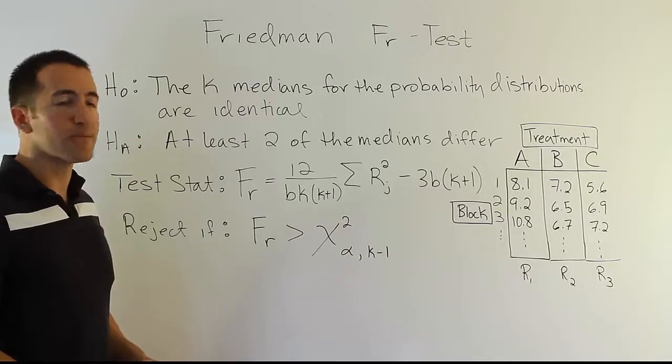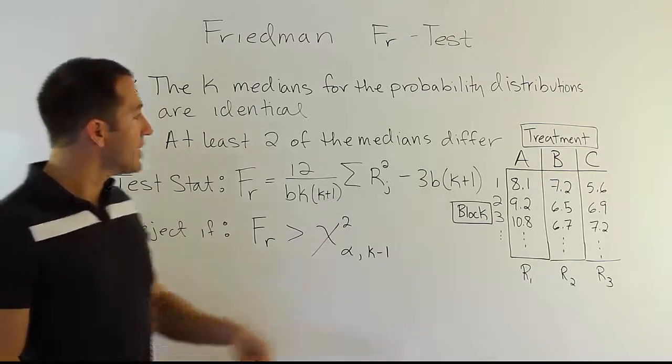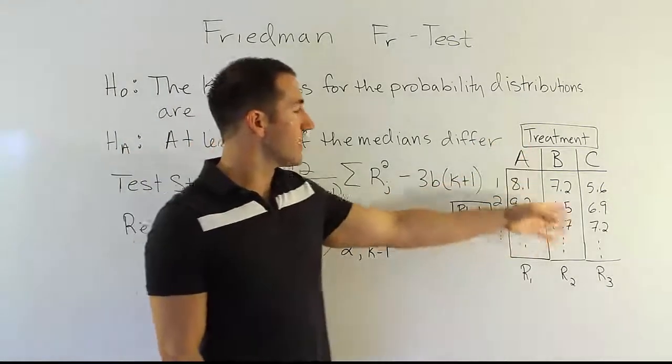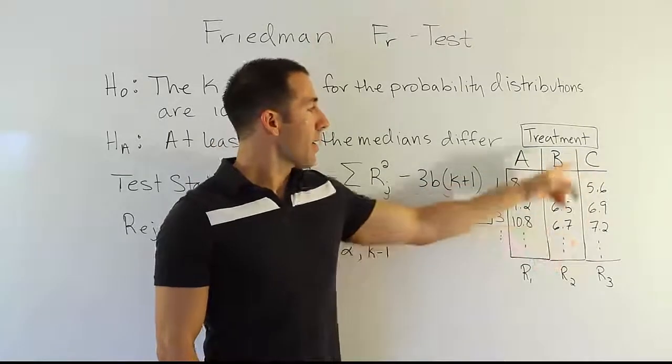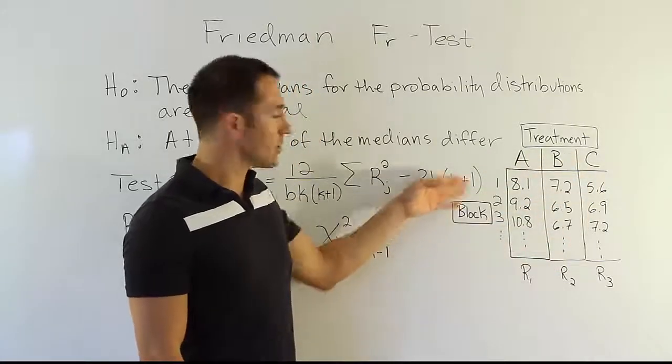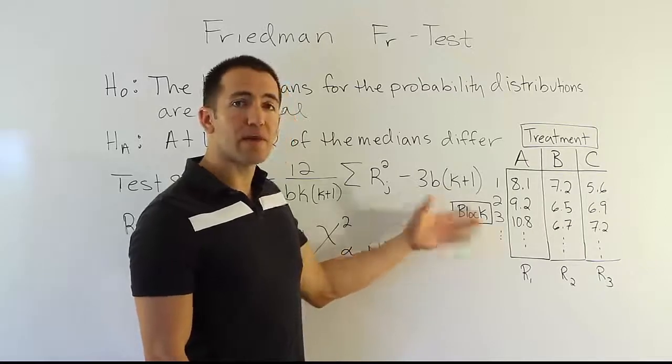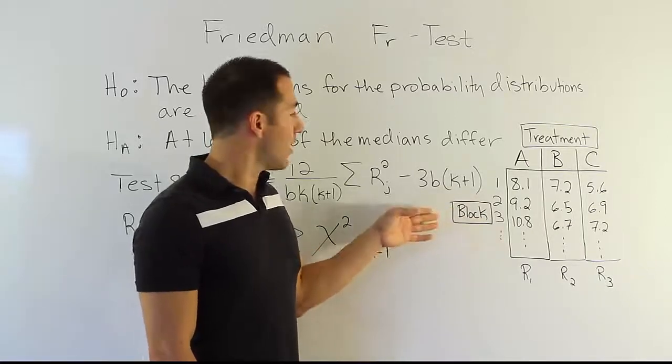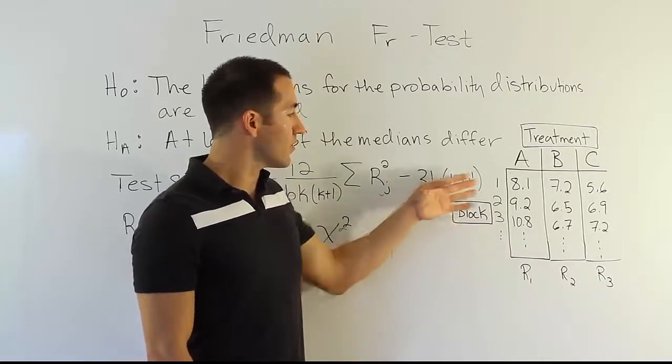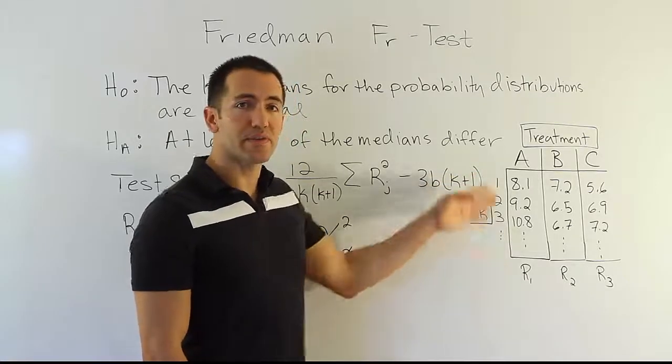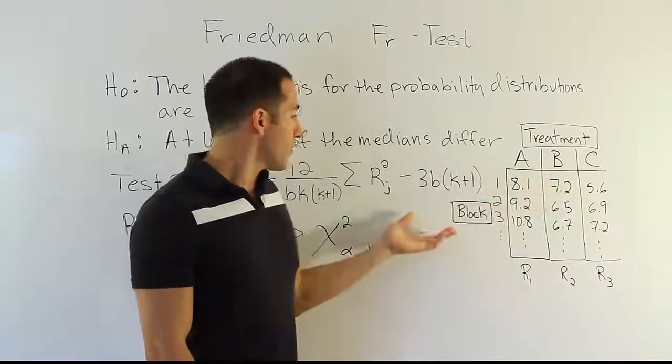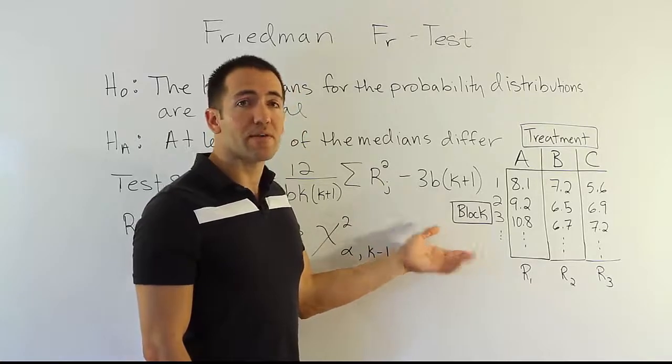If you remember the randomized block design procedure, we basically had something similar to the completely randomized design. We had treatments, but then we had subjects or some other kind of block that we wanted to block out the differences because we wanted to make sure that those blocks didn't interfere with the differences between the treatments. But for whatever reason, the design required us to use the block.